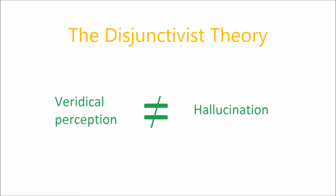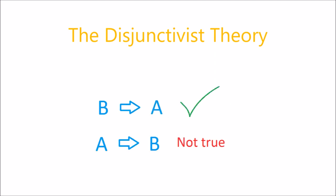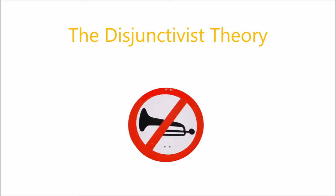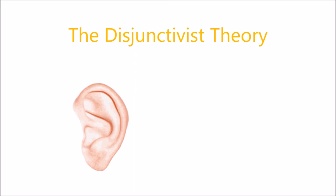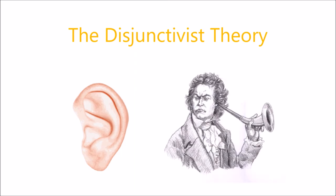Disjunctivism refutes that veridical perception and hallucinations are of the same kind. Disjunctivism claims that indistinguishability is not enough to say that perception and hallucination are of the same kind, because dependence of one thing on another does not always mean that the other is constituted by that thing. A may not be able to happen without B, but B may be able to happen without A. The argument from silence states that silence is an experience that can happen in three ways, at least two of which are of different kinds. Both hearing silence and hallucinating silence are indistinguishable from being deaf, yet being deaf is constitutively different from hearing or hallucinating silence. Therefore, two indistinguishable states can be of a different nature, so hearing and hallucinating silence can be constitutively different.